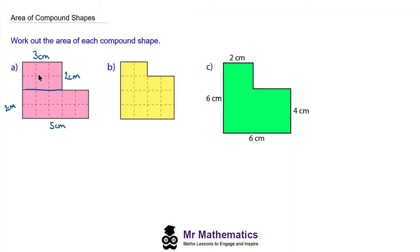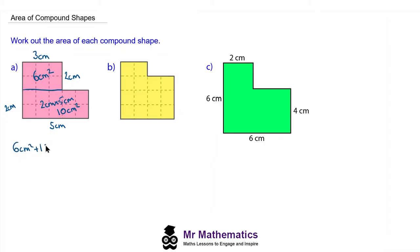The area of the rectangle on top, which is three by two, is six centimeters squared. The one below it is going to be two centimeters times five centimeters, which is ten centimeters squared. So the total area of this compound shape will be the sum of these two areas: six and ten, which gives us 16 centimeters squared.